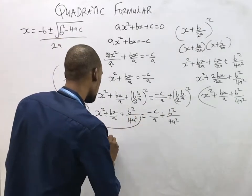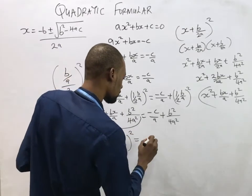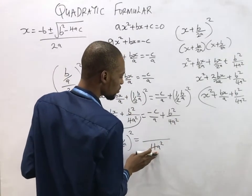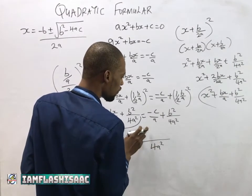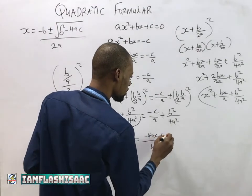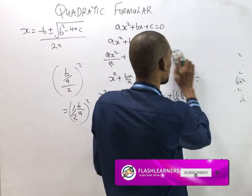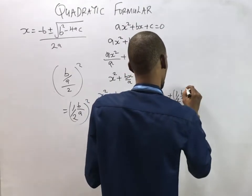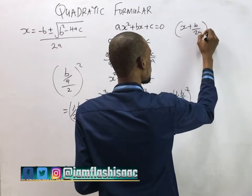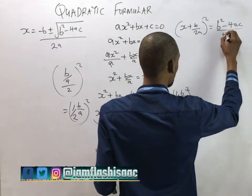Replacing the left-hand side with this perfect square, we have (x + b/2a)² equals negative c over a plus b² over 4a². Now let's find the LCM of the right-hand side. The LCM is 4a². So 4a² divided by a leaves 4a, and 4a times negative c gives negative 4ac, plus b². This gives us (x + b/2a)² equals (b² minus 4ac) over 4a².